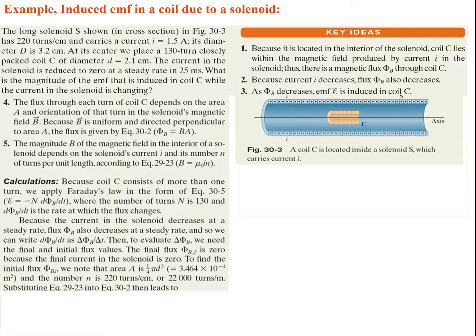Let's do an example. A long solenoid shown in cross-section has 220 turns per centimeter and carries a current of 1.5 amps, with a diameter of 3.2 centimeters. At its center, we place a 130-turn closely packed coil C of diameter 2.1 centimeters. The current in the solenoid is reduced to zero at a steady rate in 25 milliseconds. We want to find the magnitude of the EMF induced in coil C while the solenoid current is changing.